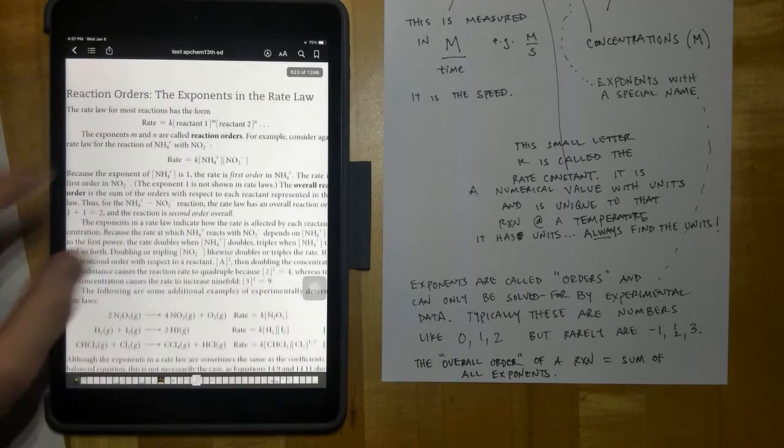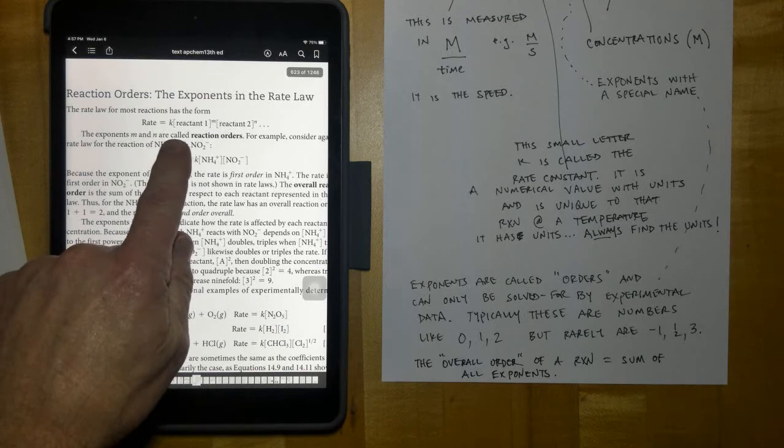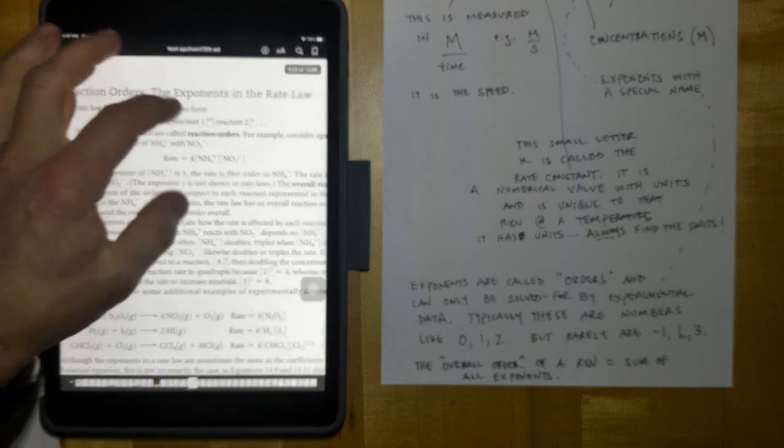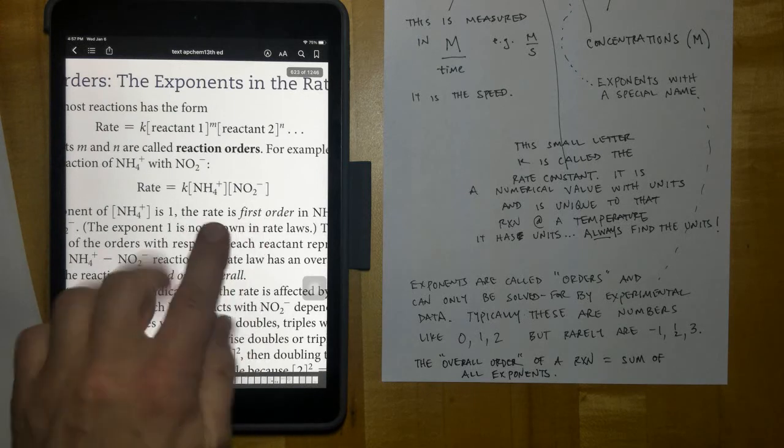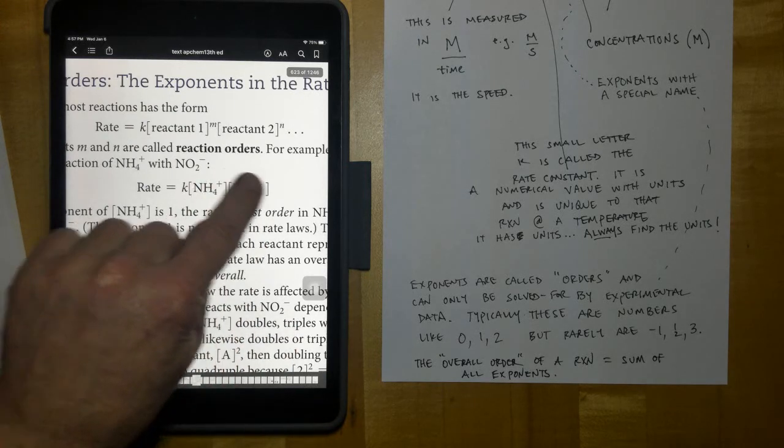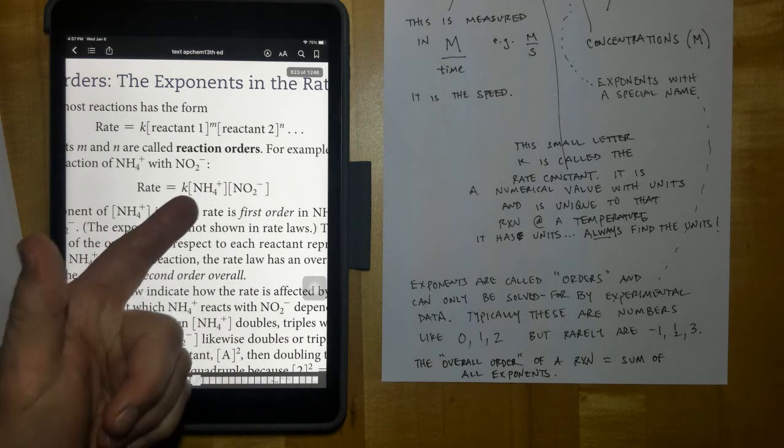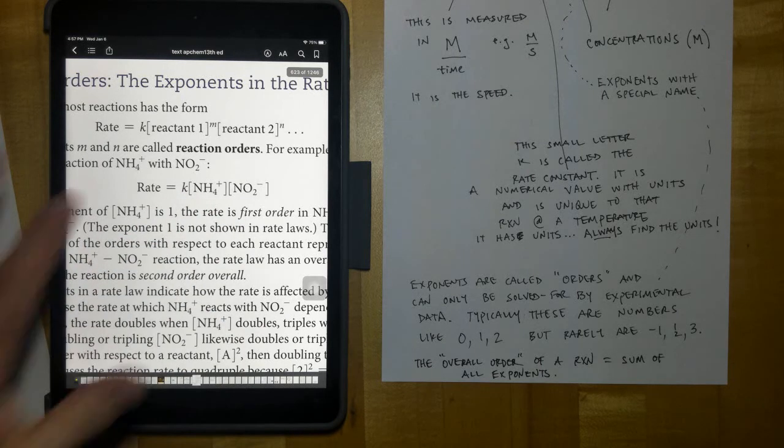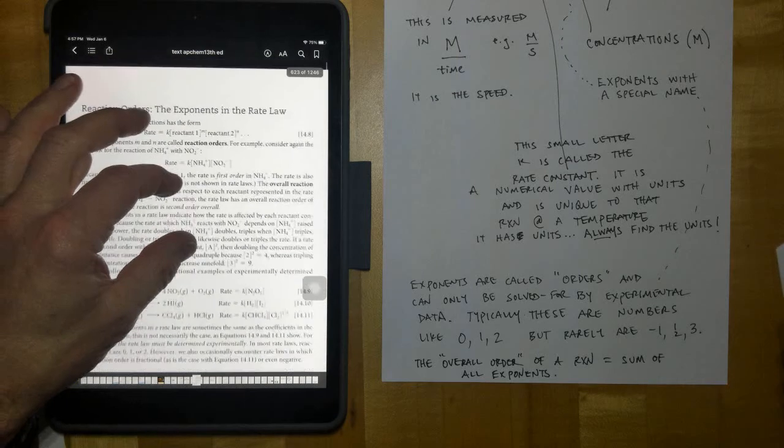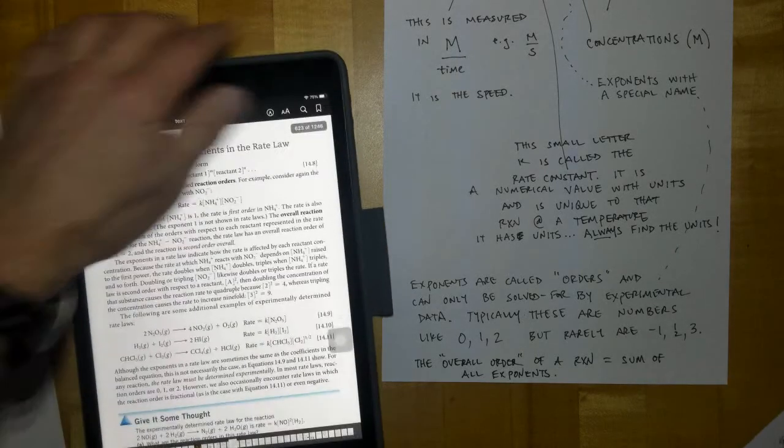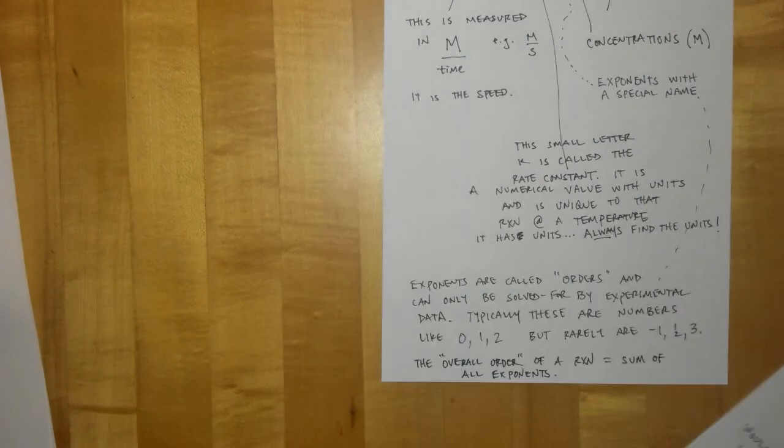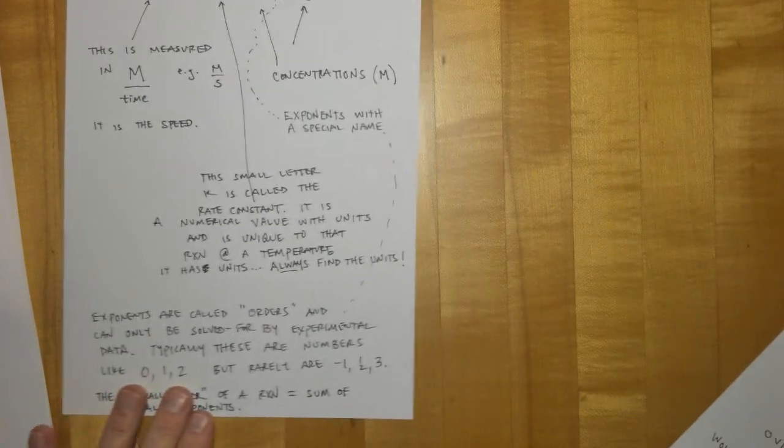You can also calculate the overall order of a reaction, and that equals the sum of all the exponents. You can see right here that they give another example of it to the M and to the N, and then here's an example of a rate expression with some real chemicals in it, and notice there's no numbers up above there, so it would be first order, or first power for NH4, and first power for NO2 minus. I'm going to slide this out of the way, slide this paper over in case you're not quite done writing all that down, and then we're going to do one example like this.